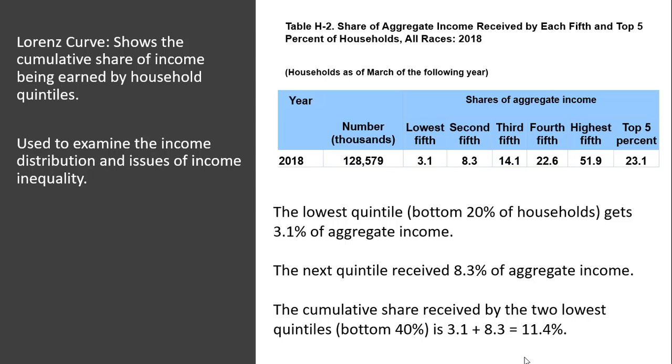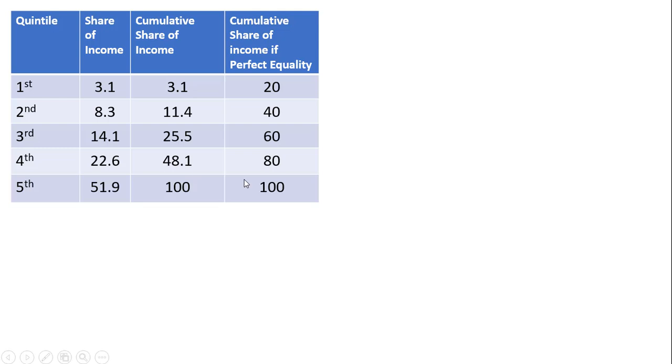We could look at the cumulative share received by the bottom three quintiles, bottom four quintiles, and so on. Moving on, just taking that information in that last table and rewriting it slightly.